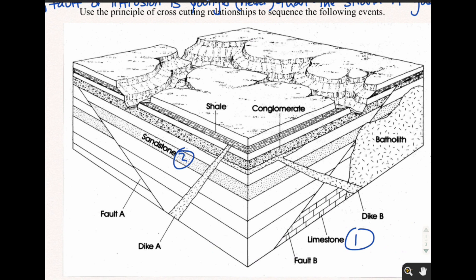Then after that we have Fault A. Why is Fault A the third thing? Because everything else from Fault A is either on top of it or goes through other things that are above it.